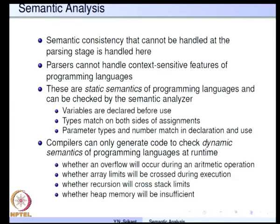There are two types of semantics that programming languages have. One is known as static semantics and the other is known as dynamic semantics. Static semantics, as the name indicates, do not depend on the run-time system and the execution of the program, but are dependent only on the programming language definition. Dynamic semantics are properties of the programming language systems that occur at run time, and we need to check such properties only during execution time of the program.